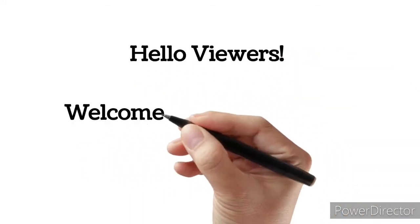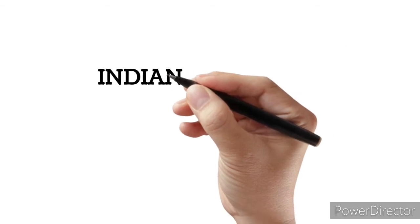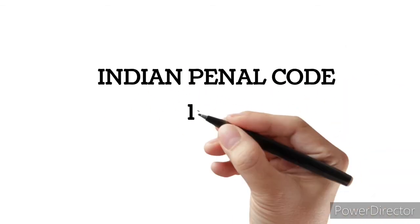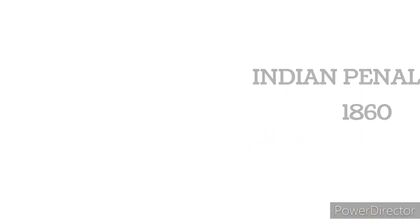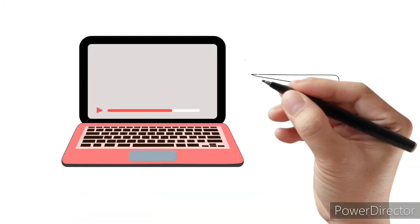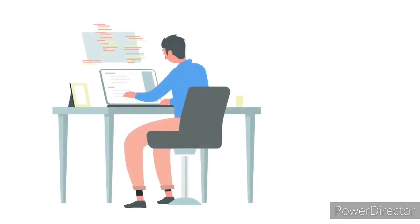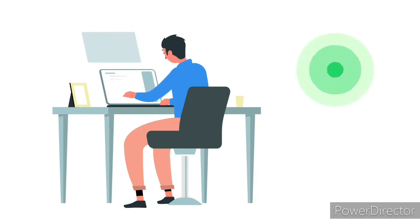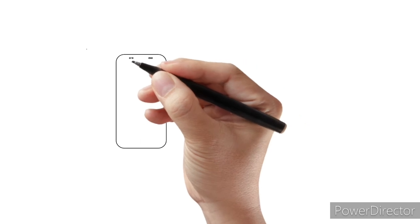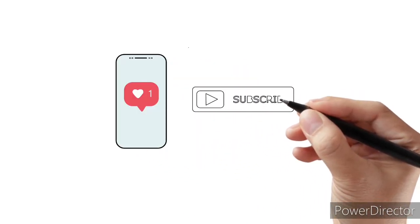Hello viewers, welcome back to my channel Legal Decipher. In the previous video, we had discussed about Chapter 10 of the Indian Penal Code 1860. If you have not seen that video, you can go and check it — the link is in the description below. In today's video, we are going to discuss Chapter 11 of the Indian Penal Code. Please like and subscribe to my channel to get video notifications. So let's get started.